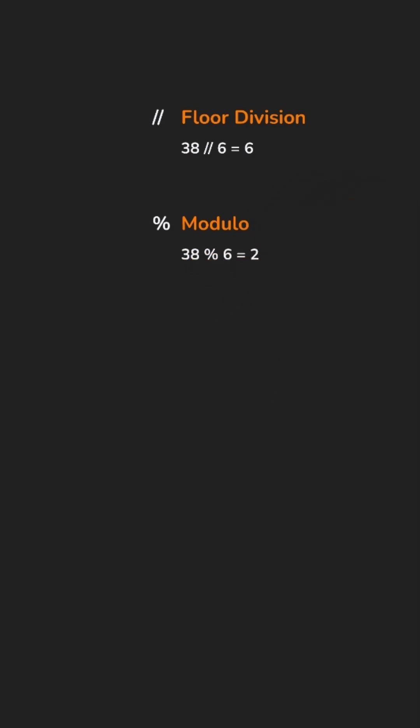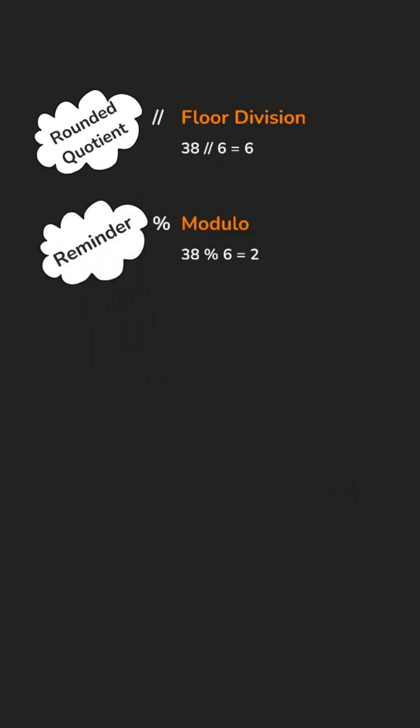Floor Division gives you the quotient but rounded down to the nearest integer. Modulo gives you the remainder, the part that's left over.